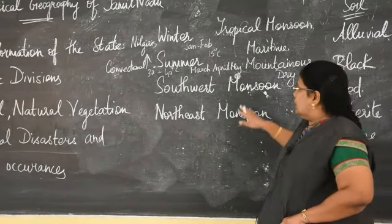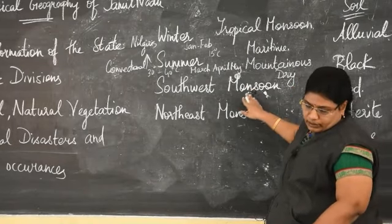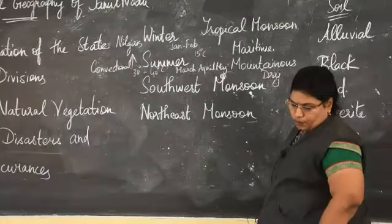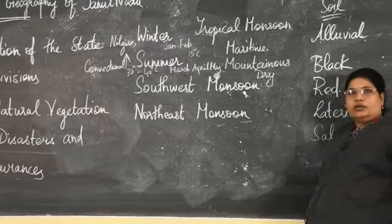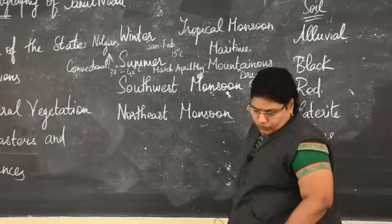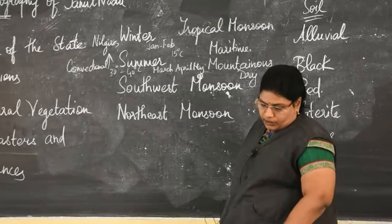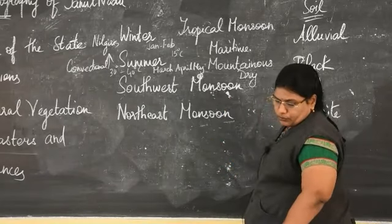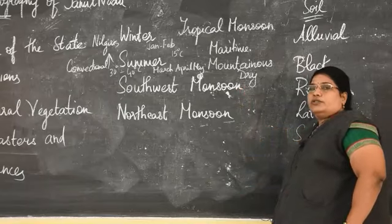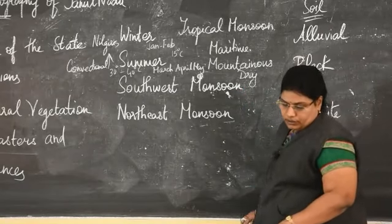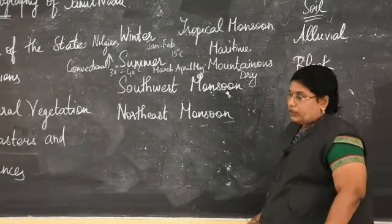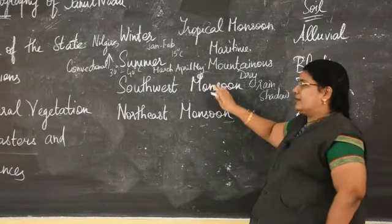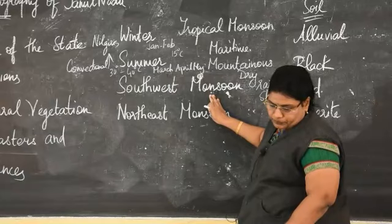The southwest monsoon happens because of the heating of the landmass in North India. Because of low pressure in North India, it draws water from the Indian Ocean, and the entire wind from the Indian Ocean moves towards the state. However, since Tamil Nadu is located in the rain shadow region during the southwest monsoon, it does not get much rain from the southwest monsoon.